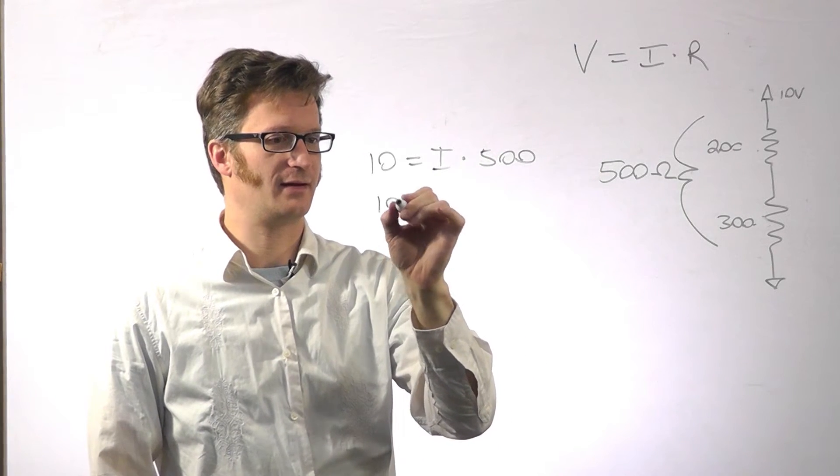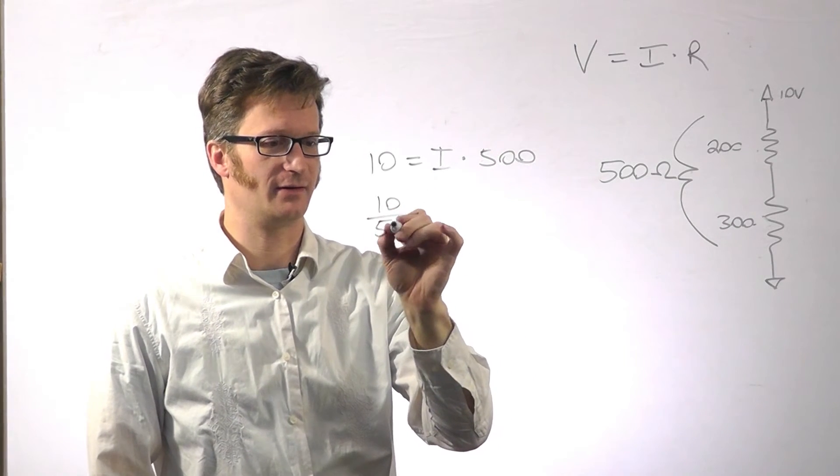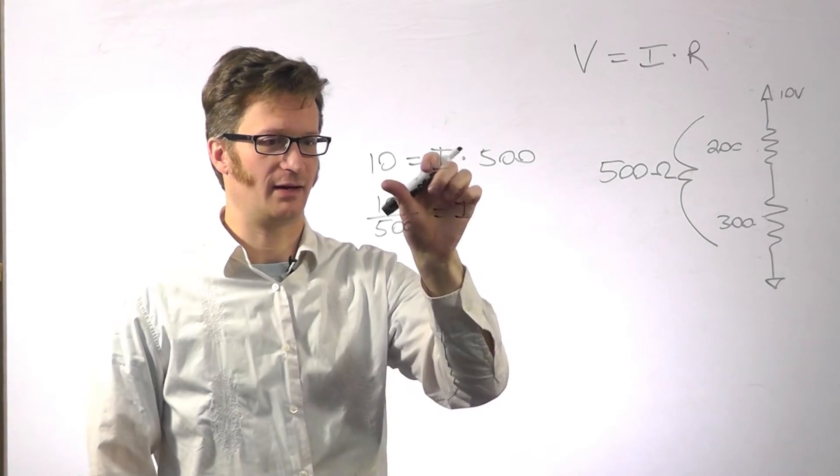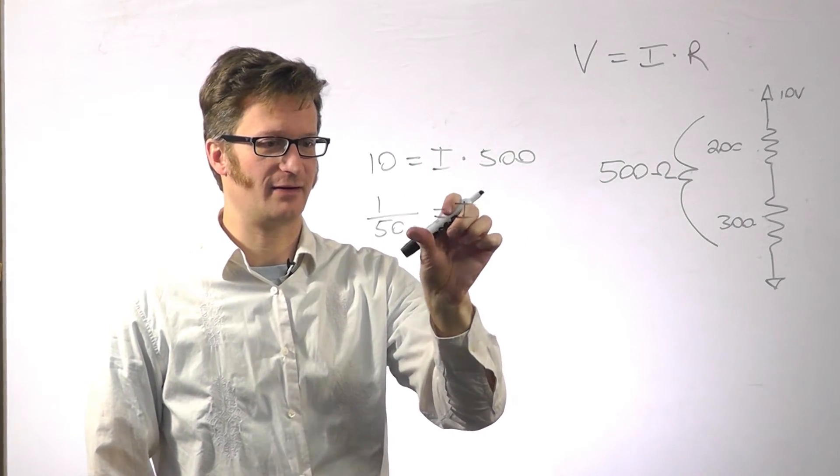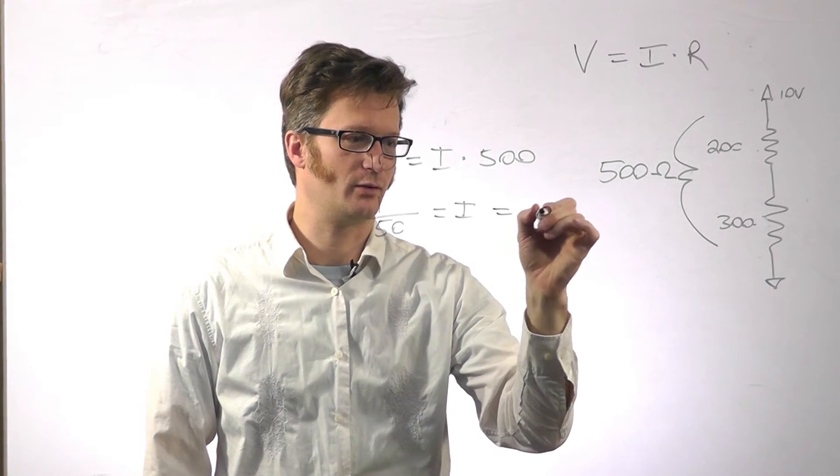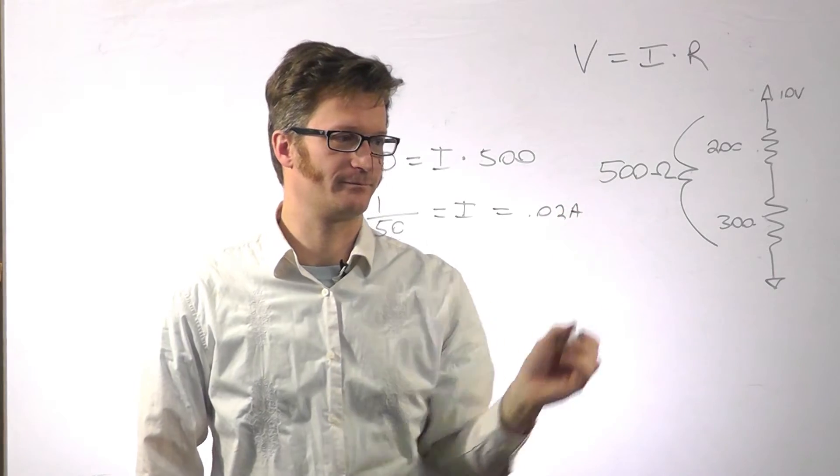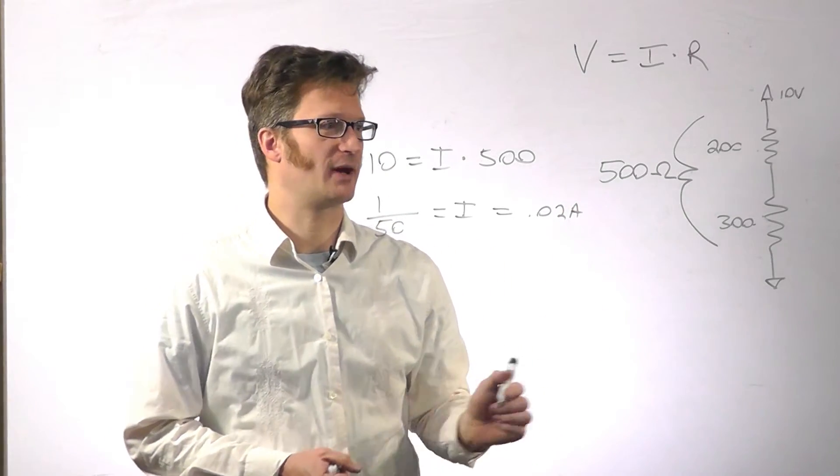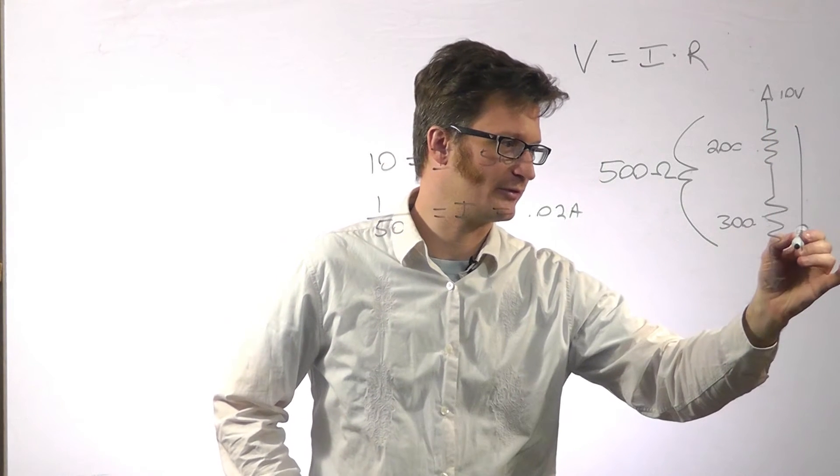So 10 divided by 500 equals my current. And we can just divide out here. So it's 1/50th which equals 0.02 amps. So that is my current through the whole string here.